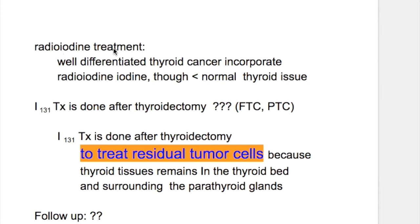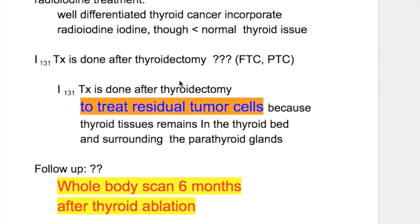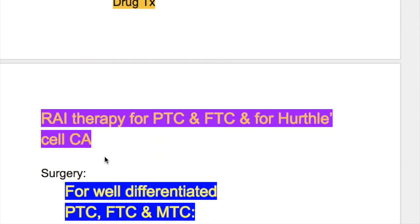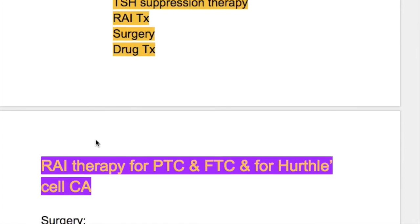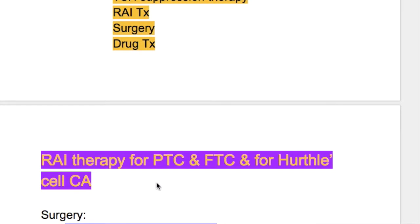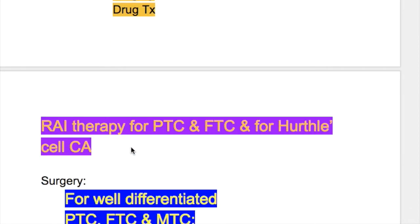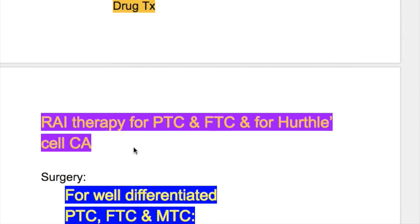Radioiodine treatment is done for well-differentiated thyroid cancers, which incorporate radioiodine though less than normal thyroid tissue. It is used for papillary, follicular, and Hürthle cell carcinoma. It is not done for medullary or anaplastic thyroid carcinoma because they don't take radioactive iodine.